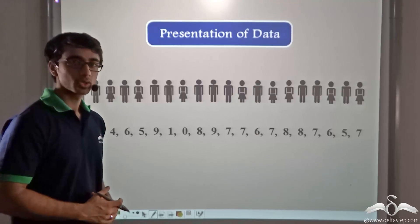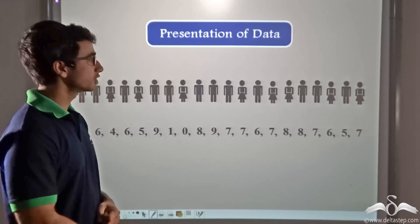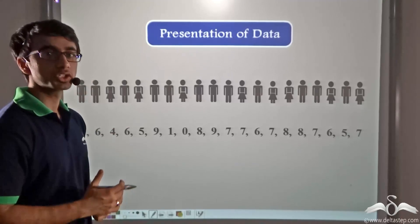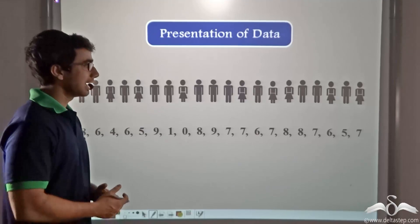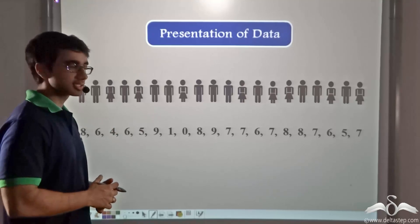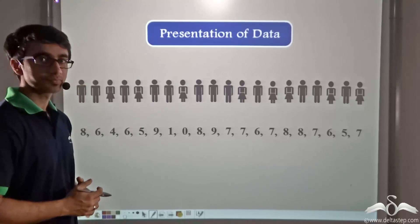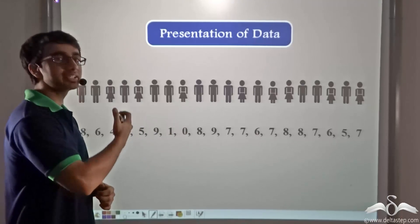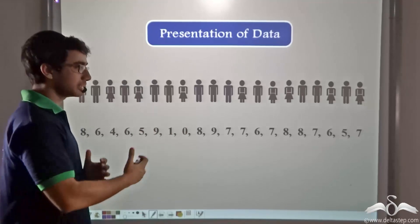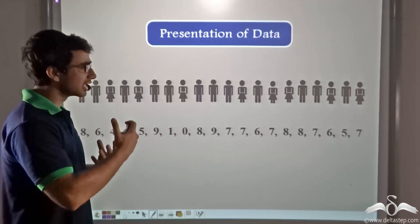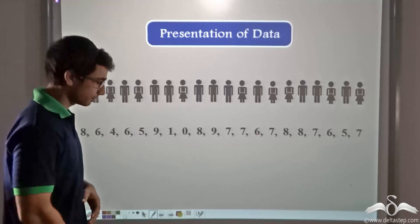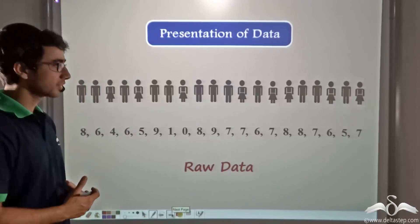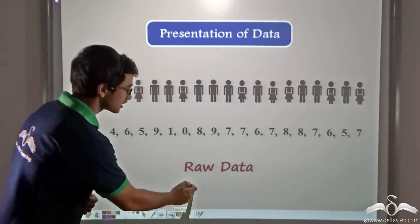There was a teacher in a school who conducted a surprise test for 20 students. This surprise test was conducted for a total marks of 10, and the marks obtained by the students have been given as you can see. If you observe closely, you will find that these marks obtained by the 20 students have been collected but not arranged in any particular format. So this data is known as raw data.